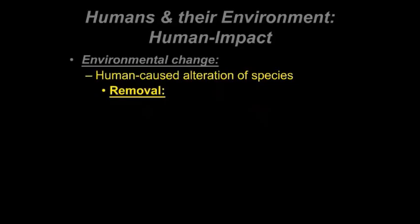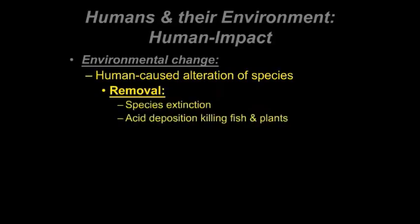We'll look at both vegetation and animals and the removal of those species over time. In terms of our oceans and water bodies, one of the things happening is acid rain, which is due to industrial pollution, which we'll talk about later. This has started to kill fish and plants in certain areas, so although we won't focus on aquatic life, species removal definitely occurs there.